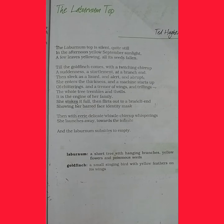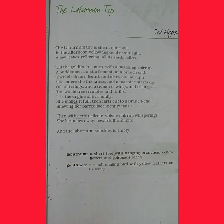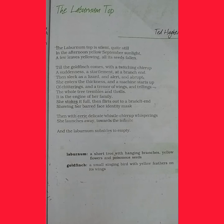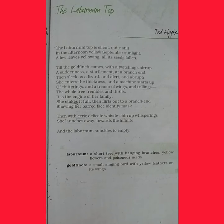Now the next stanza: 'Till the goldfinch comes with a twitching chirrup.' The goldfinch is a small singing bird with yellow feathers on its wings. As soon as it comes, it arrives with a twitching chirrup — a sound word. Then a suddenness, a startlement at a branch end.